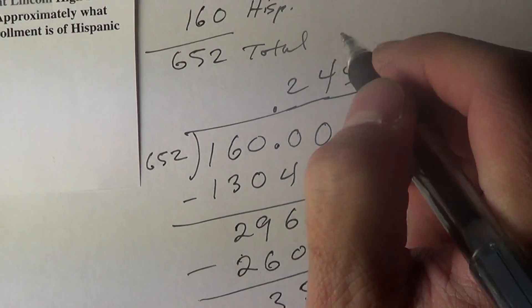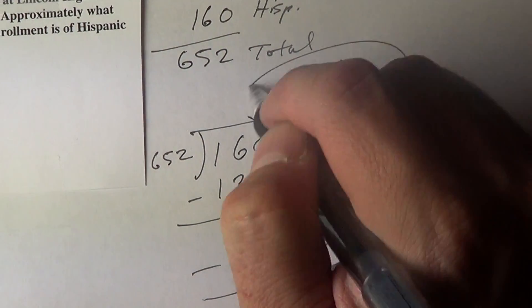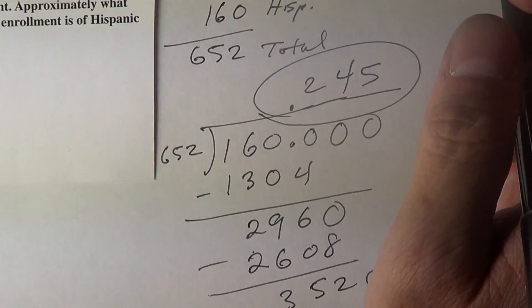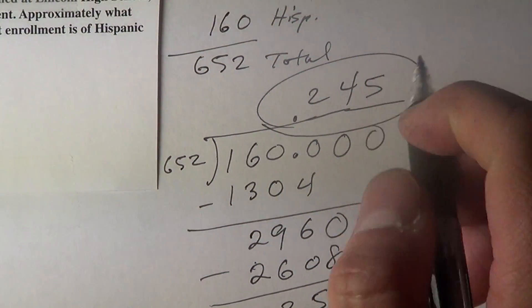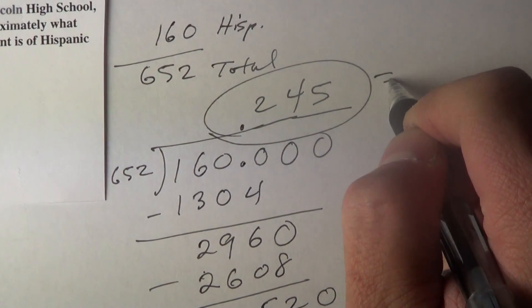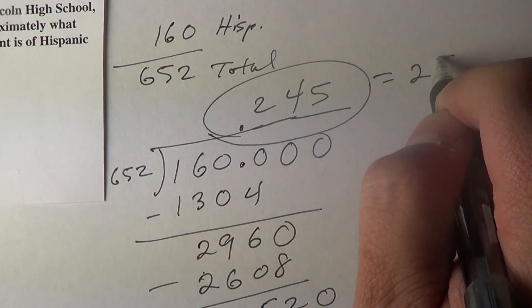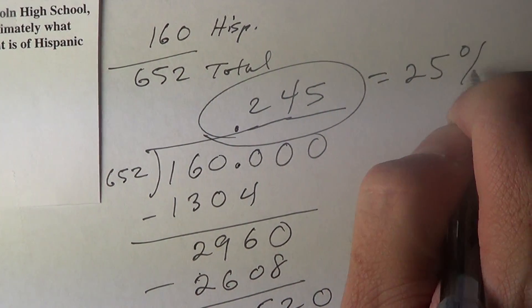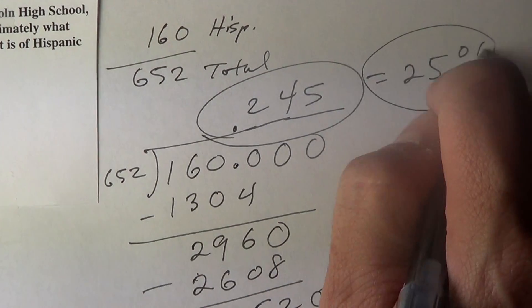Our closest answer is about — roughly about — if we round it up, it would be about 25%.